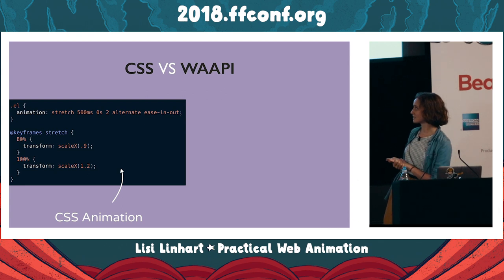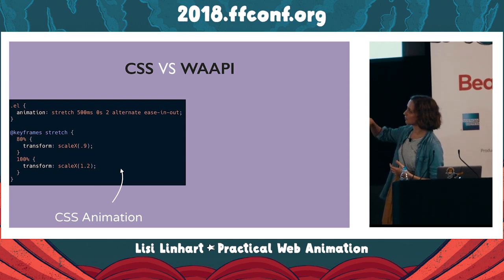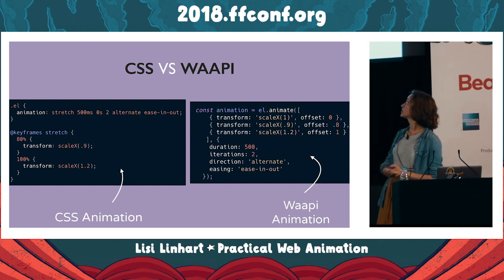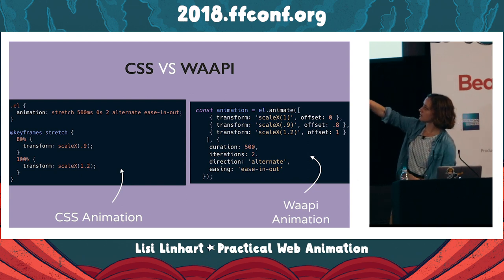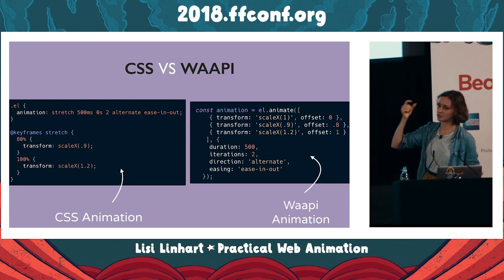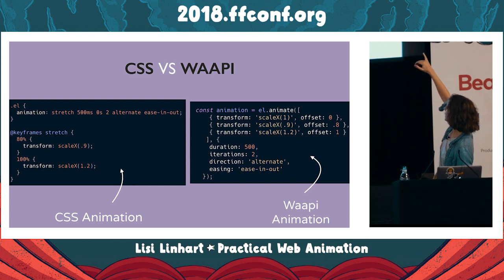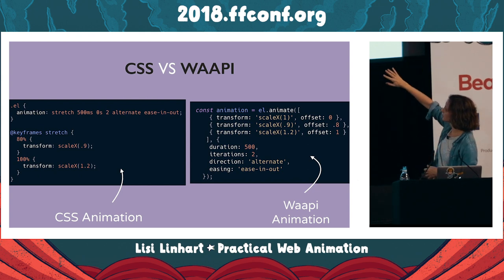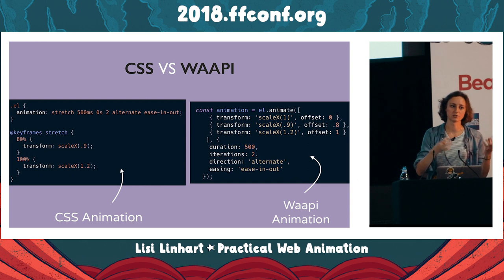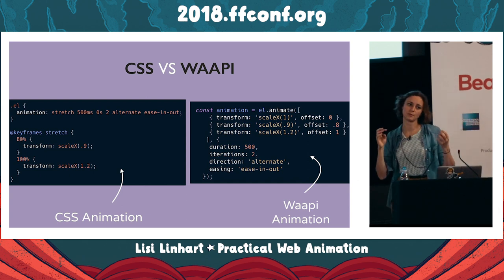Comparing CSS animation to the Web Animations API: in CSS you define @keyframes with a name and stages, then call the animation with a duration. With the WAAPI, you call .animate() and pass the same keyframe data, including percentage-based offsets using the offset keyword (0 to 1, vs 0–100% in CSS). The timing object also uses the same keywords as CSS animation because both use the same browser rendering engine.